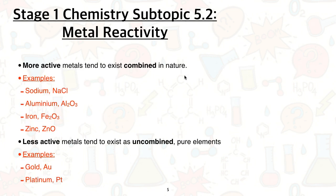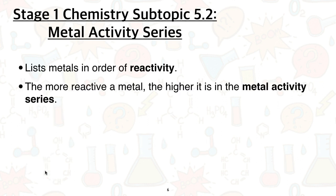Certain metals can only be found combined in nature — sodium, aluminium, iron, zinc are found in compound form, also referred to as combined form. Many of these are found in ores, which we mine, process, and then extract the metal from. Whereas metals that are much less reactive — like gold, platinum, and silver — can often be found as pure samples in the ground.